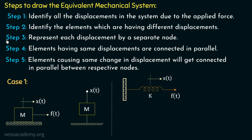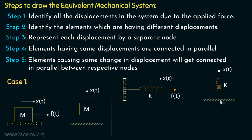We connect the spring between this node and the reference level. The equivalent mechanical system shows this spring of spring constant k connected between node x(t) and the reference level, indicating that the spring is undergoing displacement x(t) under the applied force. Since we have only one element, steps four and five do not apply here either.